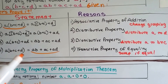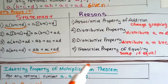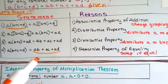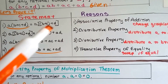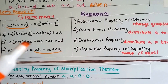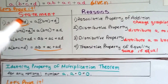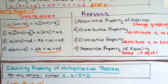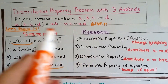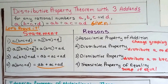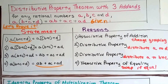Now we can use the transitive property — swap if it's equal — to say that the original expression a(b + c + d) equals ab + ac + ad, because if each step is equal to the next, then the first must equal the last. That's exactly what the distributive property theorem was saying, and we've proven it's true.